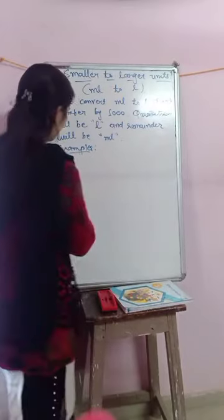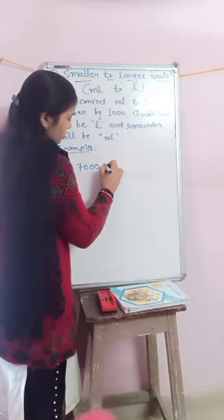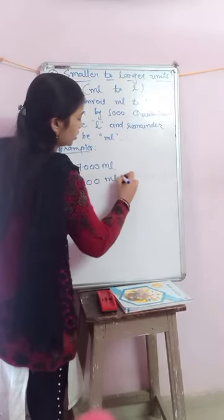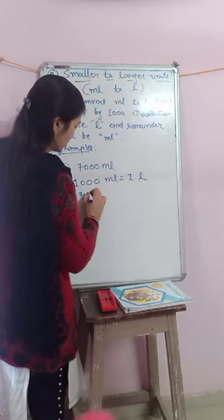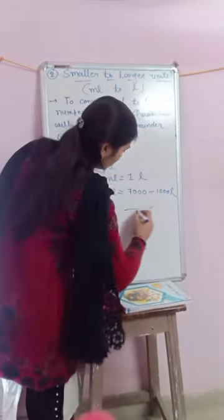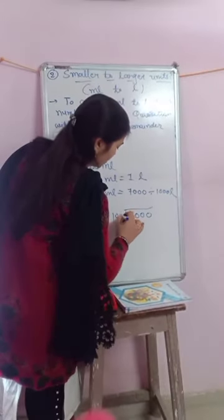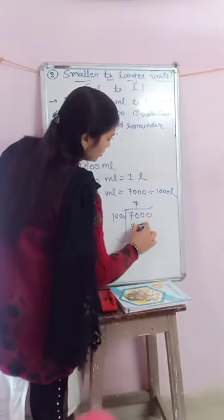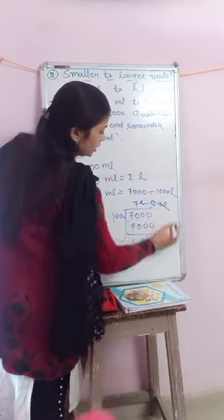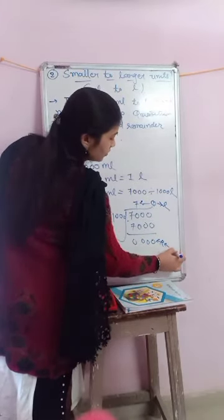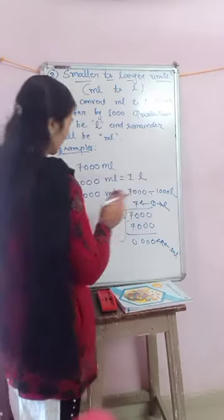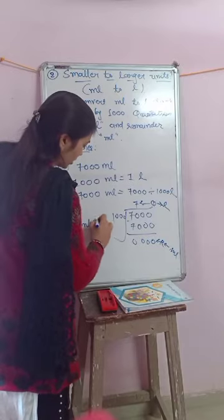Example one: 7,000 milliliters. Here milliliter is given. As you know, 1,000 milliliters equals 1 liter. So 7,000 milliliters equals 7,000 divided by 1,000 liters. Here we do the division: 7,000 divided by 1,000. One thousand sevens are 7,000, remainder zero. The quotient is 7, which means liters, and remainder zero means milliliters. So 7,000 milliliters equals 7 liters.